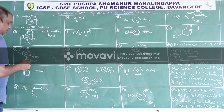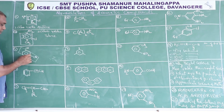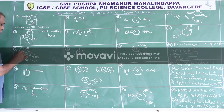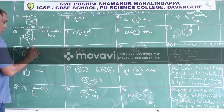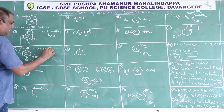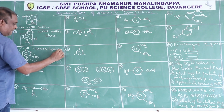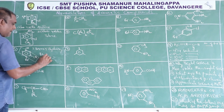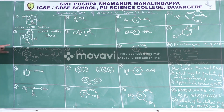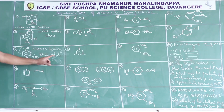The substituent of the base compound is given number 1, and numbering is done so that the immediate next substituent gets the lowest number: 2, 3, 4, 5, 6. Therefore the prefix is 2-bromo-5-hydroxy, and the IUPAC name of compound number 3 is 2-bromo-5-hydroxybenzonitrile.